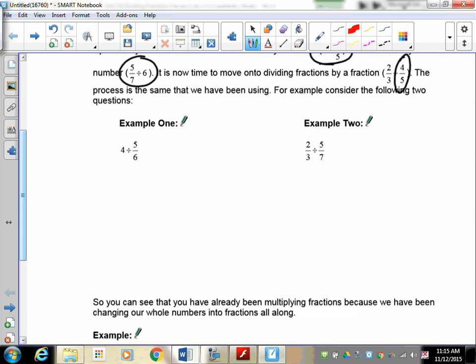If you took a look at our first example we had four divided by five over six. Our first thing was that we had to deal with the fact that we had a four here without a denominator. We learned that four was over one, and of course that changed our question to look like this: four over one divided by five over six.